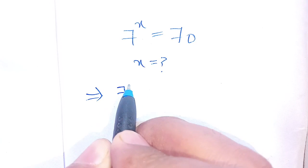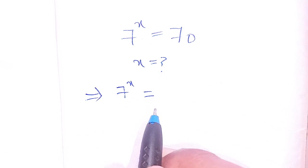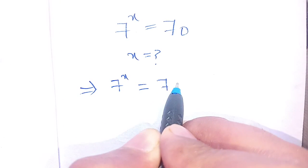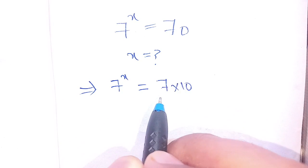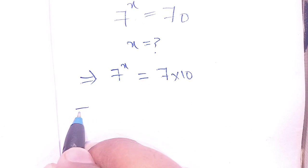We write this as 7^x = 70, which can be written as 7 times 10. 7 times 10 becomes 70. Now in the next step,